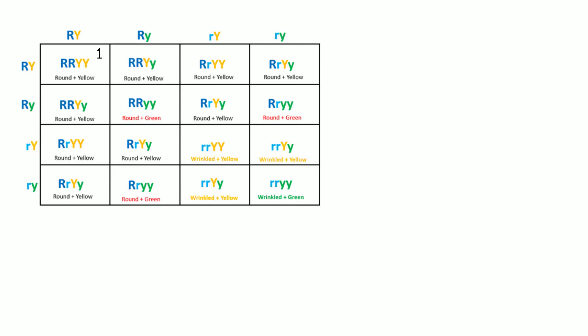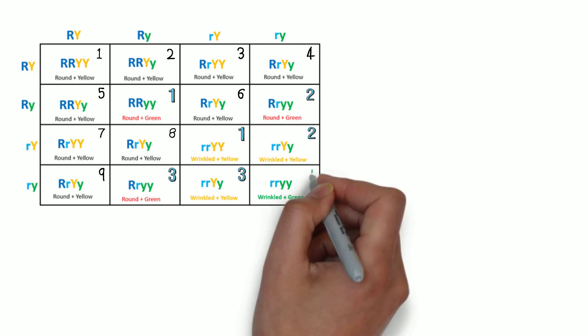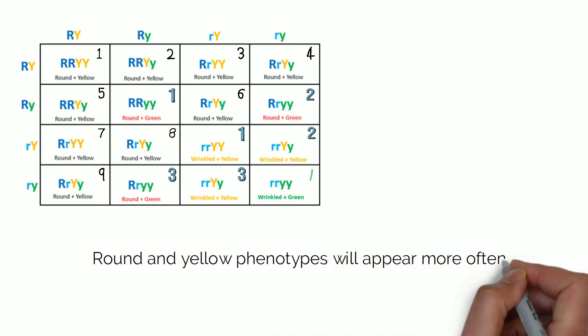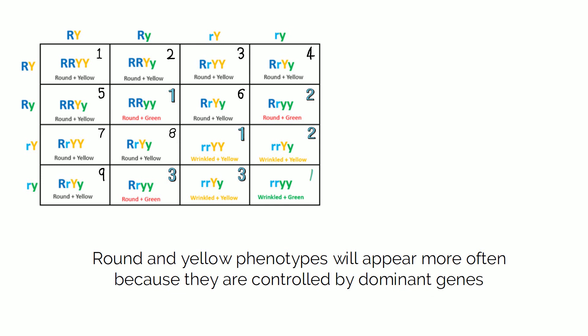In the diagram there are nine round and yellow seeds, three round and green seeds, three wrinkled and yellow, and one wrinkled and green. Round and yellow phenotypes appear more often because they are controlled by dominant genes, whereas wrinkled and green, which are controlled by recessive genes, are more rare.